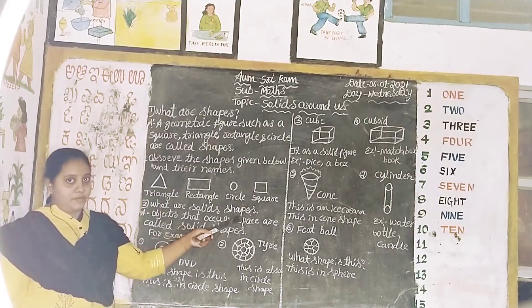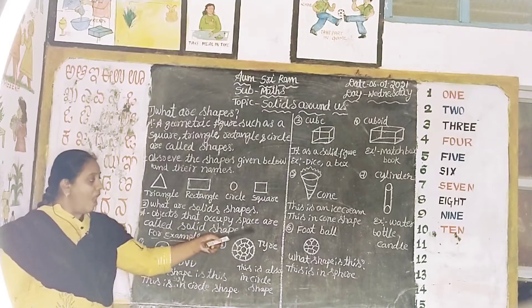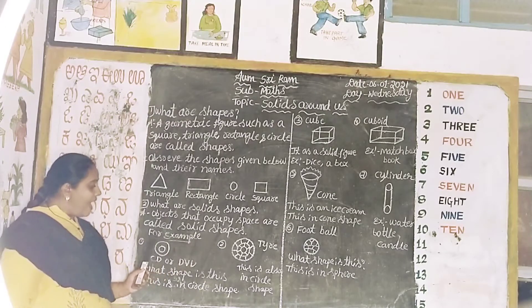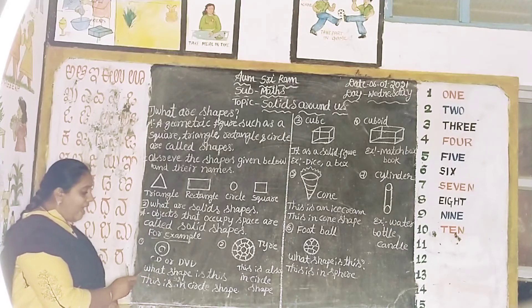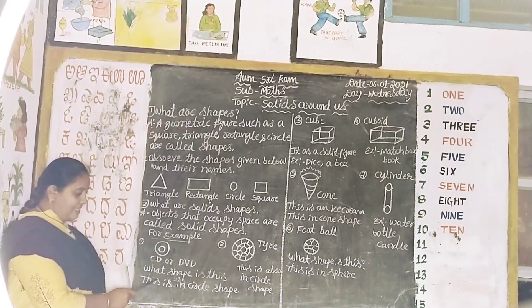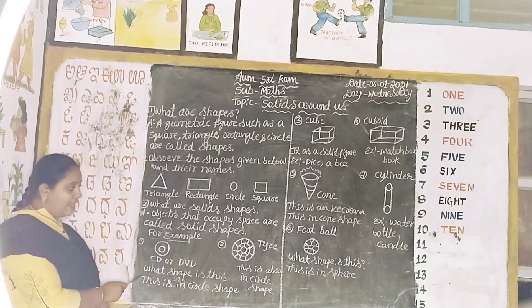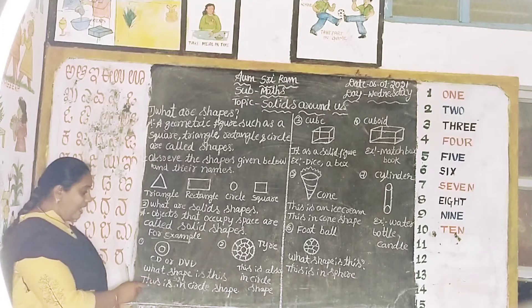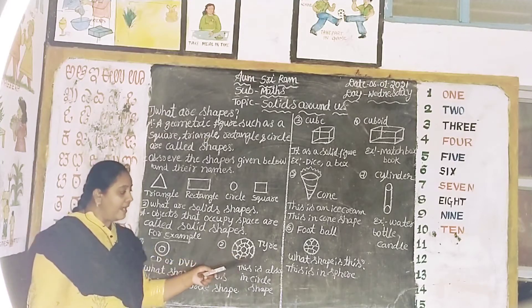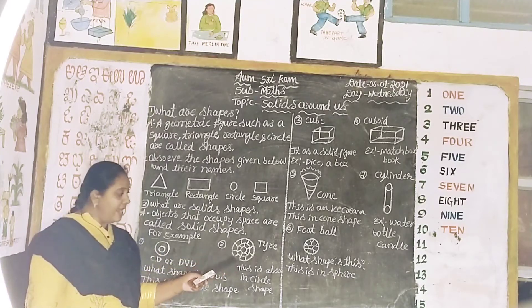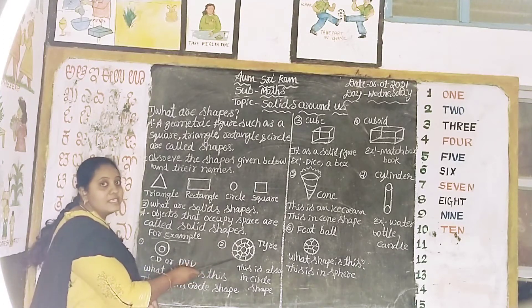What are solid shapes? Objects that occupy space are called solid shapes. For example, CD or DVD. What shape is this? This is a circle shape. CD or DVD. What shape is this? This is a circle shape. This is also in circle shape.